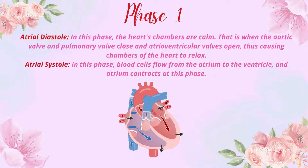Phase 1 is atrial diastole. Diastole means relaxation. In this phase, the heart chambers are calm — the aortic valve and pulmonary valve close, and the atrioventricular valves, which are the bicuspid and tricuspid valves, open up, causing the chambers of the heart to relax.